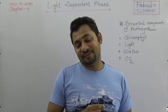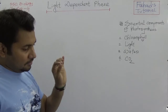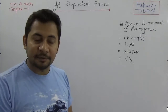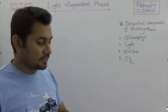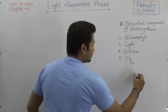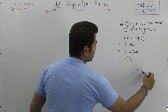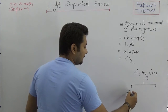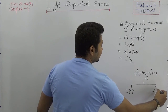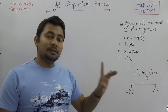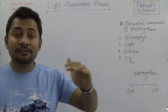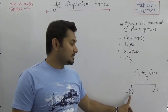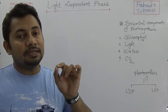Based on the light-dependent phase, you should know that in 1905 British physiologist Blackman divided photosynthesis into two different phases: the light-dependent phase and the light-independent phase. Photosynthesis is one long continuous biochemical process — it has two states, not two types: light-dependent and light-independent.